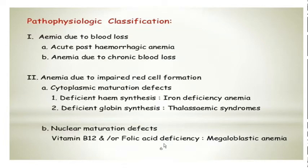Then anemia can be due to impaired red cell formation, which can be either cytoplasmic maturation defects or nuclear maturation defects. Cytoplasmic maturation defects — you can have deficient heme synthesis, which is basically what comprises iron deficiency anemia, and you can have deficient globin synthesis, which as we have talked about is thalassemia syndrome. Nuclear maturation defect is basically vitamin B12 and folate deficiency, which is also known as megaloblastic anemia.